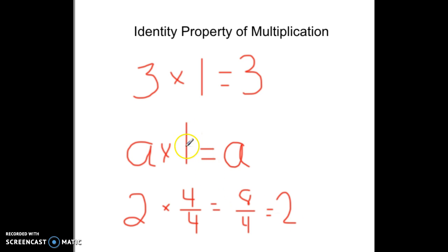So really, anything times 1, no matter what form it's in, will still give you that same number that you started with. That's the identity property of multiplication.